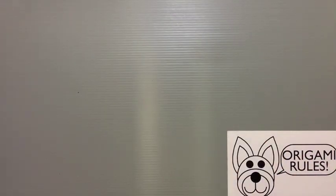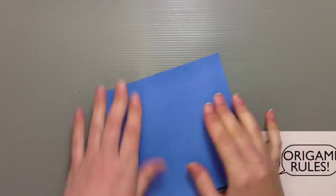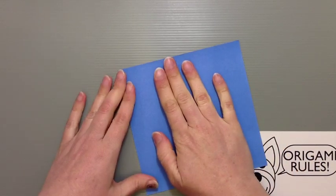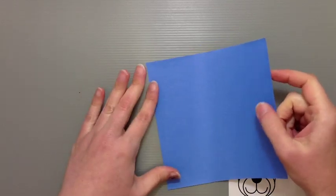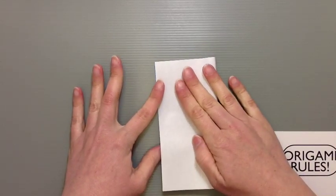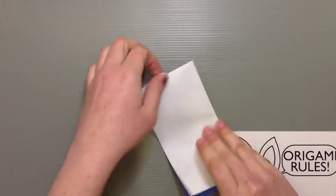So I'll show you what we need to do to make this. I'm going to start off with the color side facing up, and we want to get to the square base. So I'm just going to start by folding my paper in half. Open up and fold the other way too.